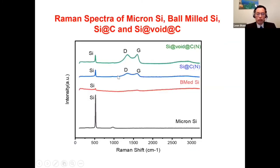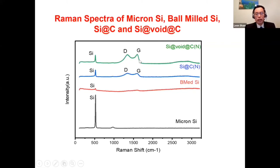Raman spectroscopy confirms whether we formed a carbon coating. The commercial powder before ball milling shows a silicon peak; after ball milling, peak intensity decreases as many defects are introduced. After carbon coating, D-band and G-band peaks appear, clearly indicating carbon coating formation. After sodium hydroxide etching, the D-band and G-band are still present, indicating the etching does not attack the carbon coating — as expected.